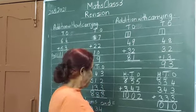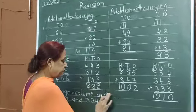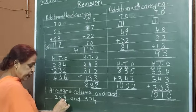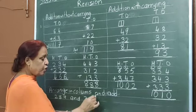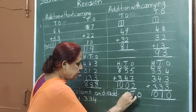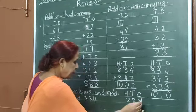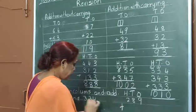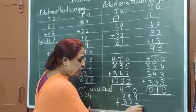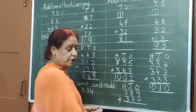Children, have you understood this? Now we will practice arranging numbers in columns and add. 289 and 334. What you have to do? You have to write like this — 1s, 10s and 100s. Now 289 here, and 334. Now we will add them. Here a box should be made. 9 plus 4 is 13.